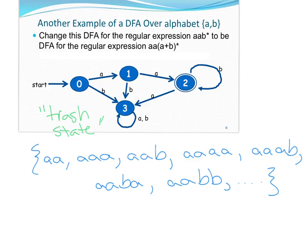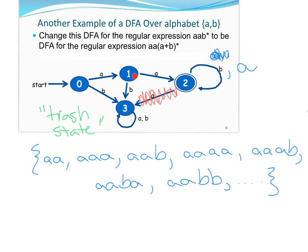Once we're in state two, we've seen two A's and we're good — if we see nothing else we accept, and if we see another A or B we're still good. So we make the loop at state two handle both A and B. For example, four A's: one, two, three, four — end up at state two, which accepts. Three A's and a B: A, A, A, B — we accept. But if a string doesn't start with two A's — say it starts with B, or A then B — we're in the trash.